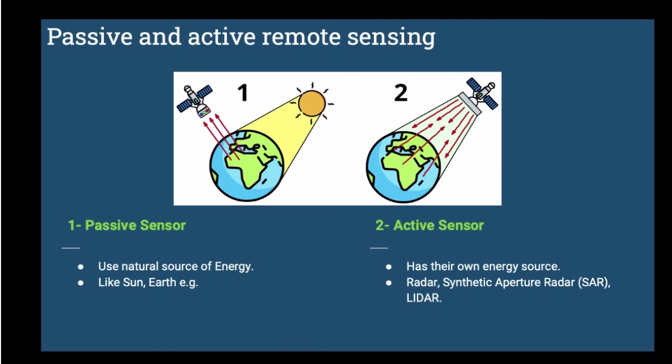Therefore, the active remote sensing in microwave is called radar remote sensing. In this lecture we will only focus on radar remote sensing, particularly synthetic aperture radar or in short we can call it SAR.